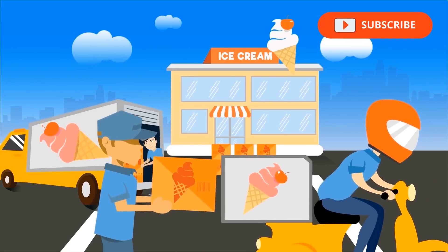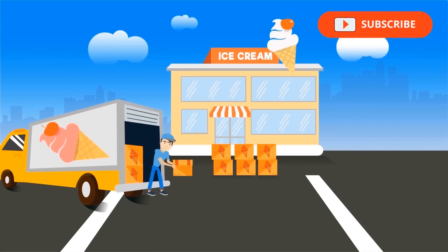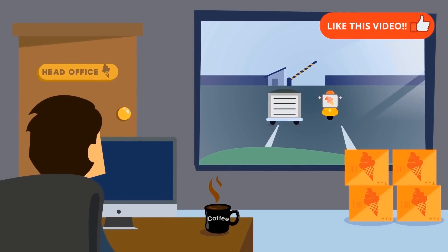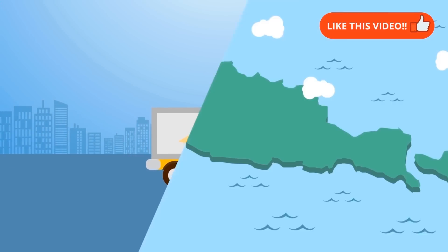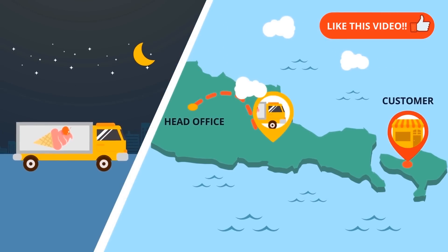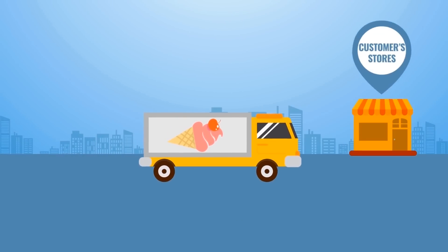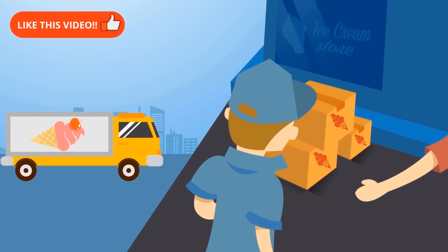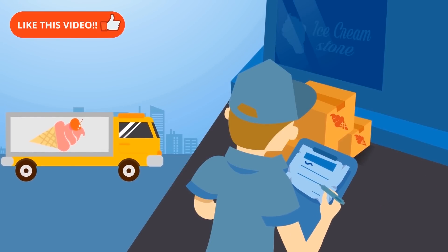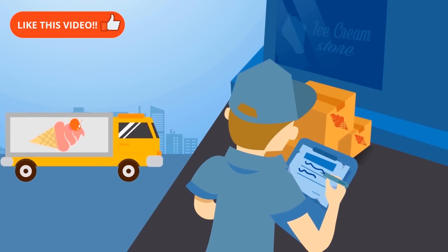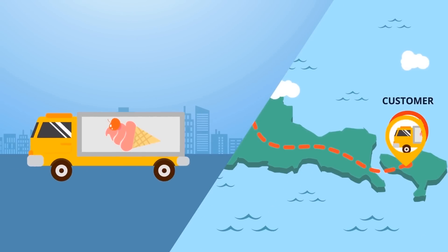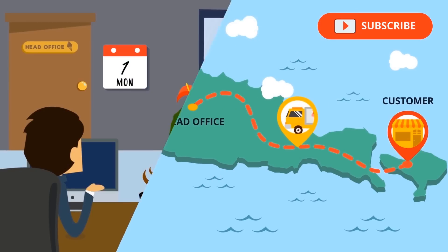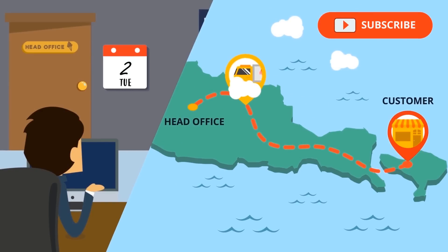A typical day of a salesman starts with the sales team preparing goods and visiting customers. Some sales visits happen within a day, while others need a couple of days. Sales transactions and stock are recorded manually, which delays the reports and often causes mistakes.